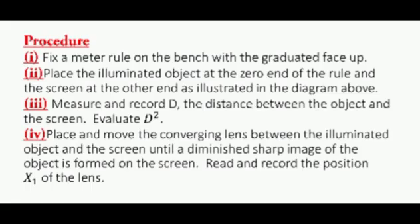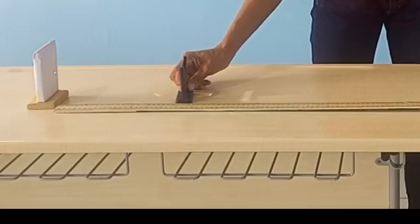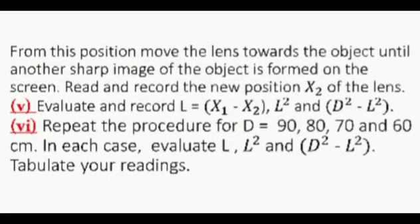Place and move the converging lens between the illuminated object and the screen until a diminished sharp image is formed. Read and record the position x1 of the lens. From this position, move the lens towards the object until another sharp image of the object is formed on the screen. Read and record the new position x2 of the lens. Evaluate and record L equals x1 minus x2, L square and D square minus L square.